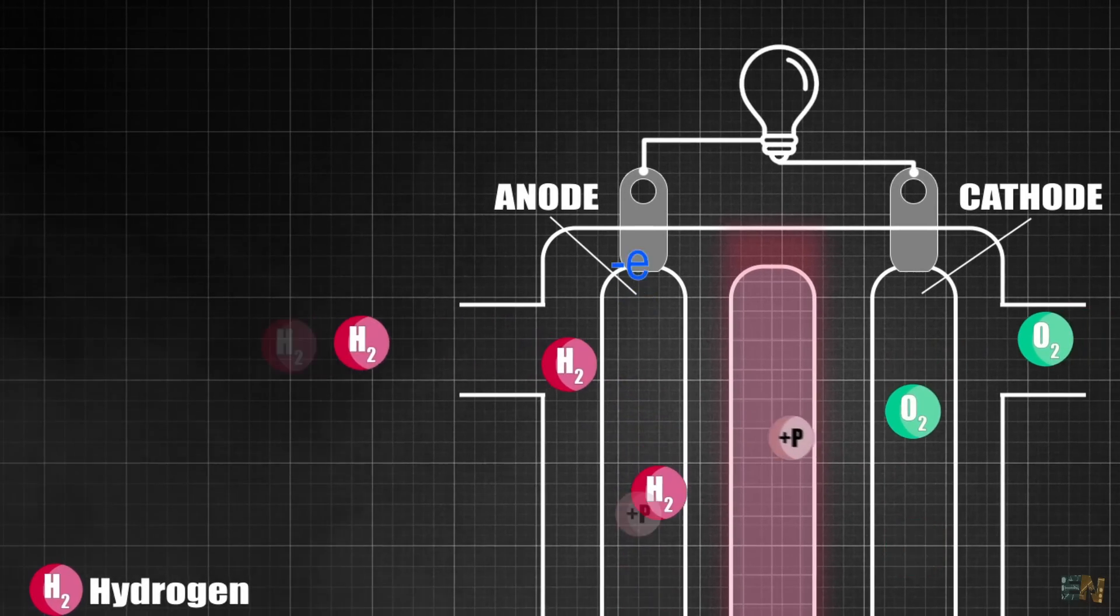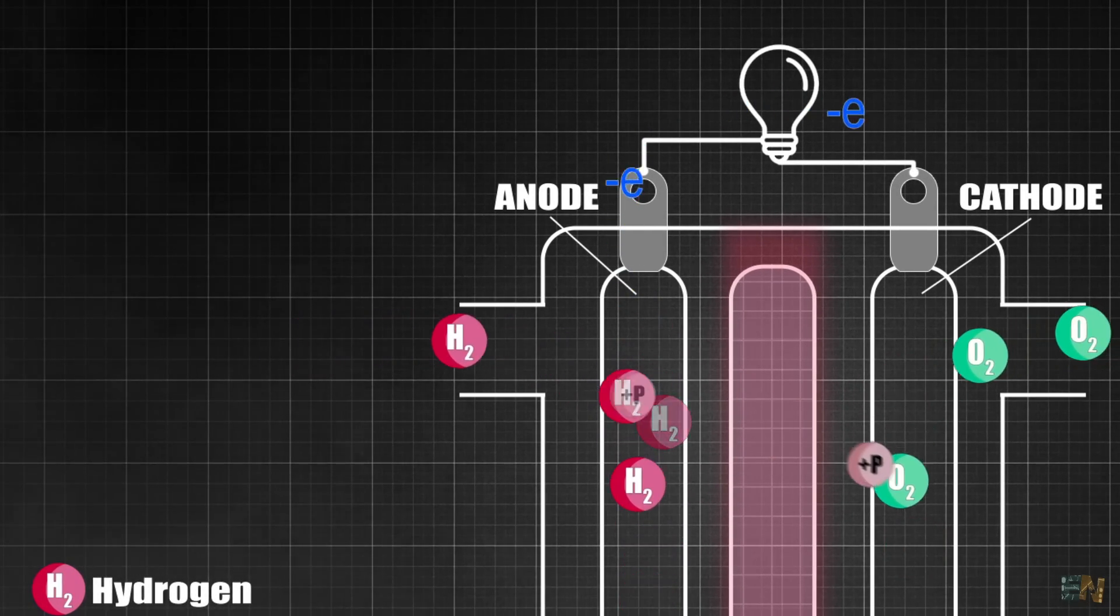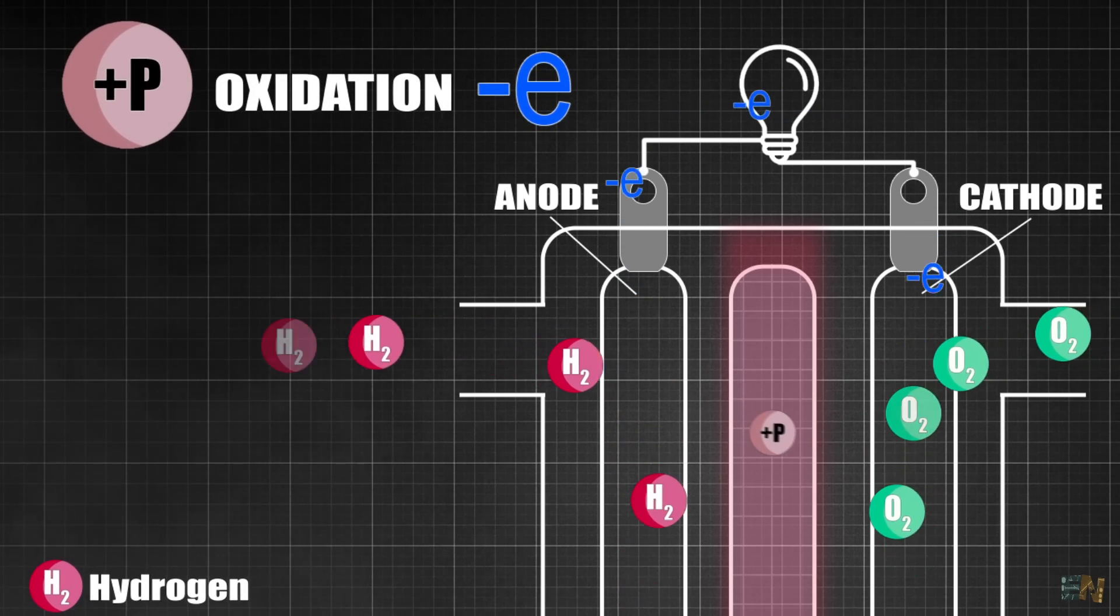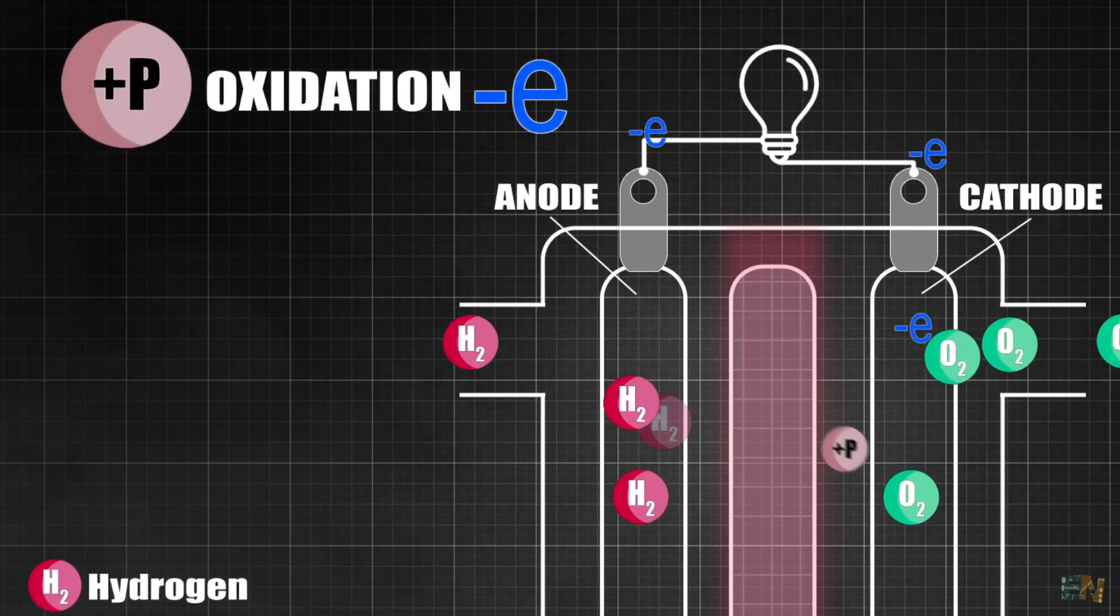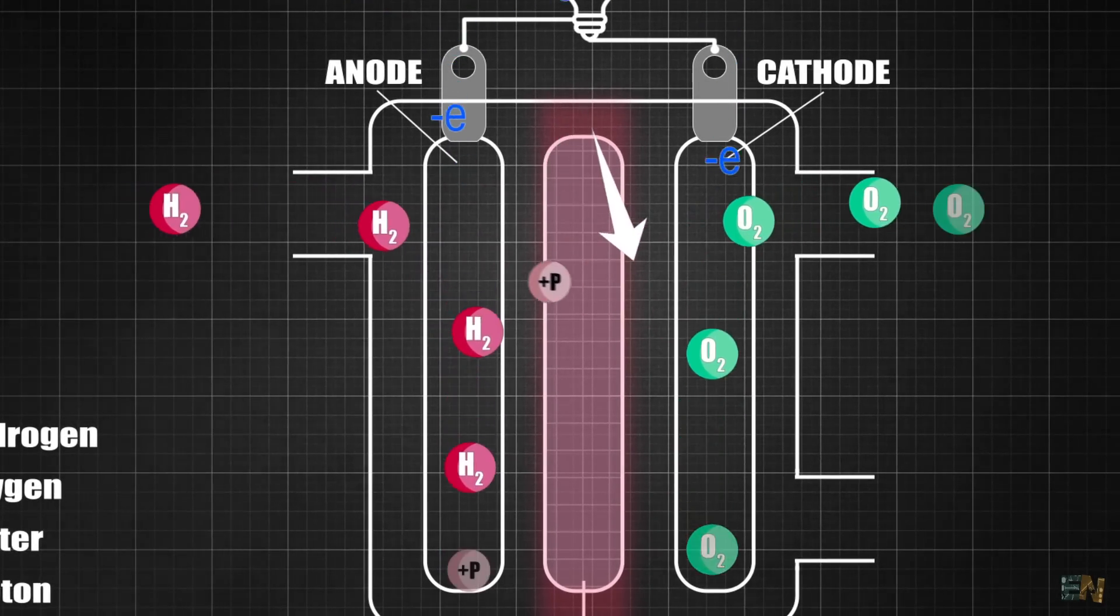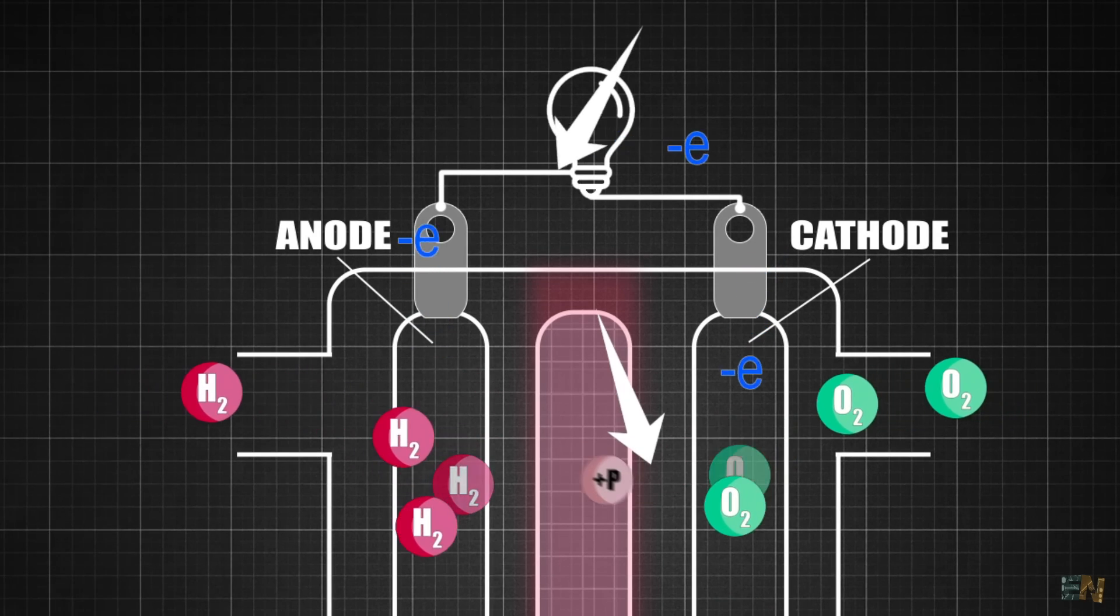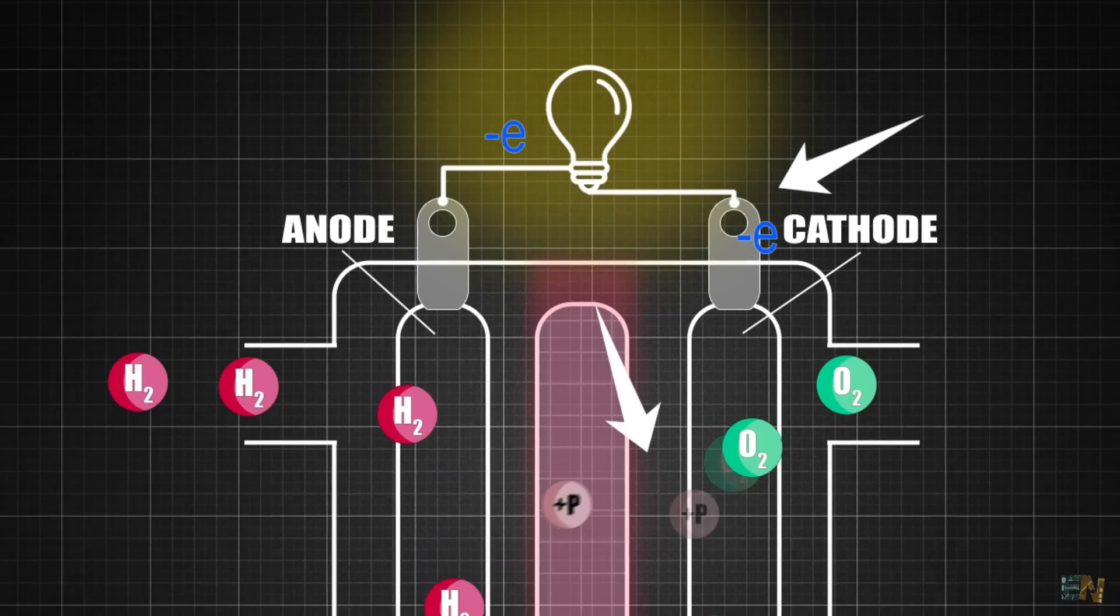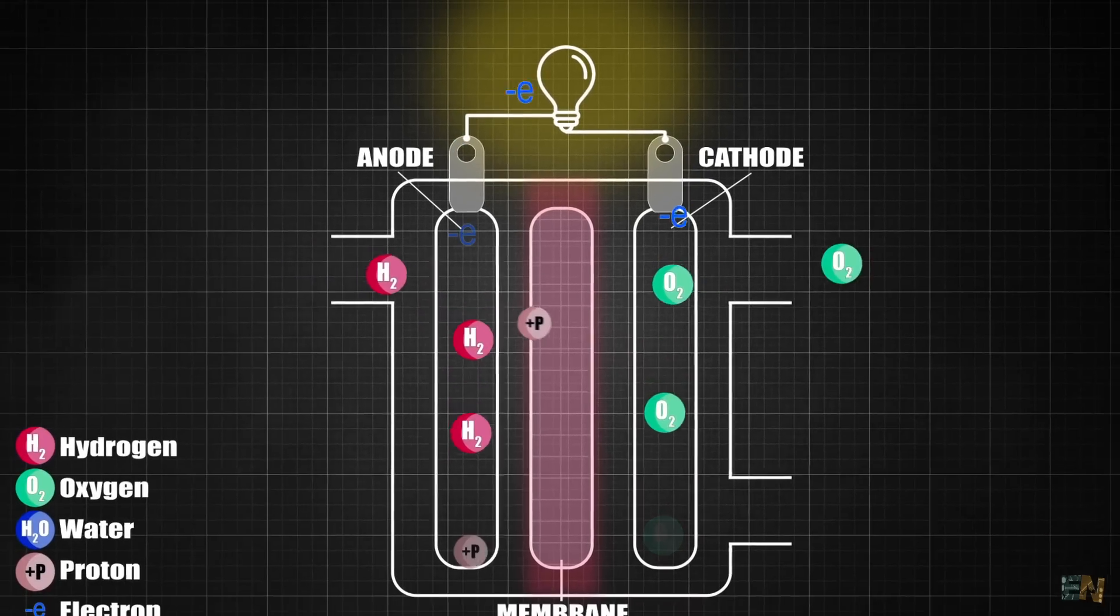At the anode, the hydrogen molecules are split into protons, H+, and electrons, E-, in a process that is called oxidation. So the protons are released into the electrolyte, while the electrons are travelling through the external circuit to the cathode, creating a flow of electrical current. And that's how we can create our electrical energy.